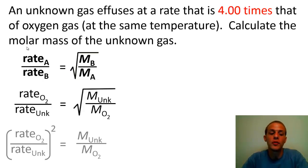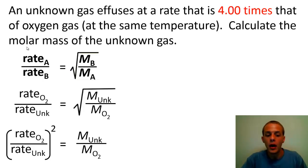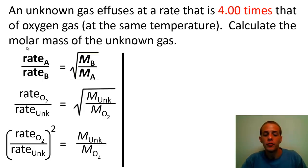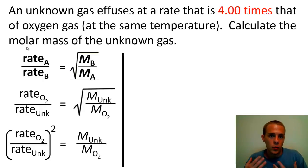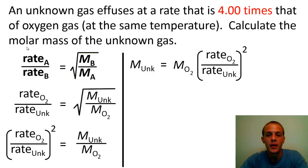If we square both sides of this equation, we get: the quantity (rate of oxygen divided by rate of unknown) squared equals molar mass of unknown divided by molar mass of oxygen. Then we multiply both sides by the molar mass of oxygen to isolate the molar mass of the unknown on one side. This gives us the final result: molar mass of unknown equals molar mass of oxygen multiplied by the square of (rate of effusion for oxygen divided by rate of effusion for the unknown).